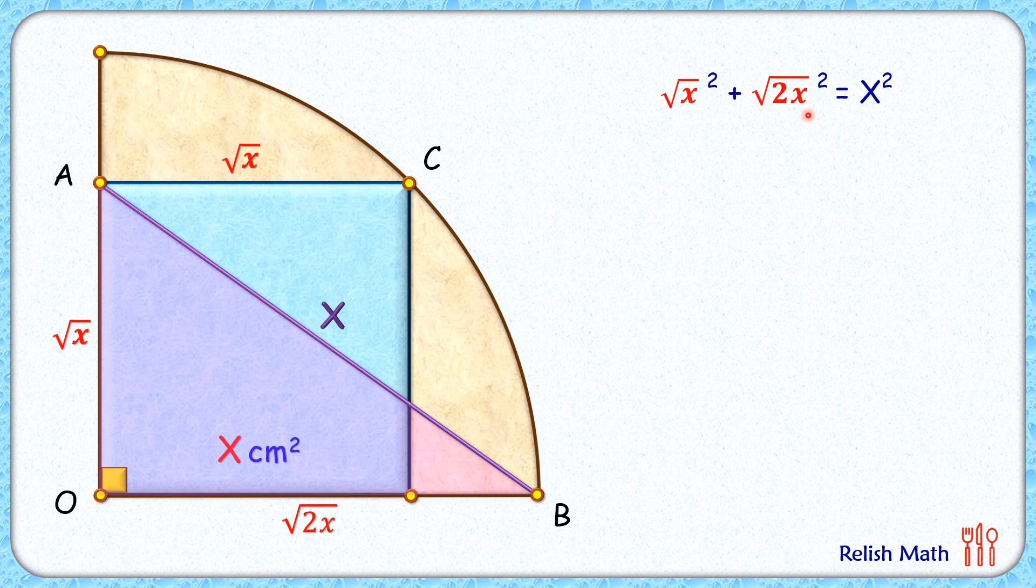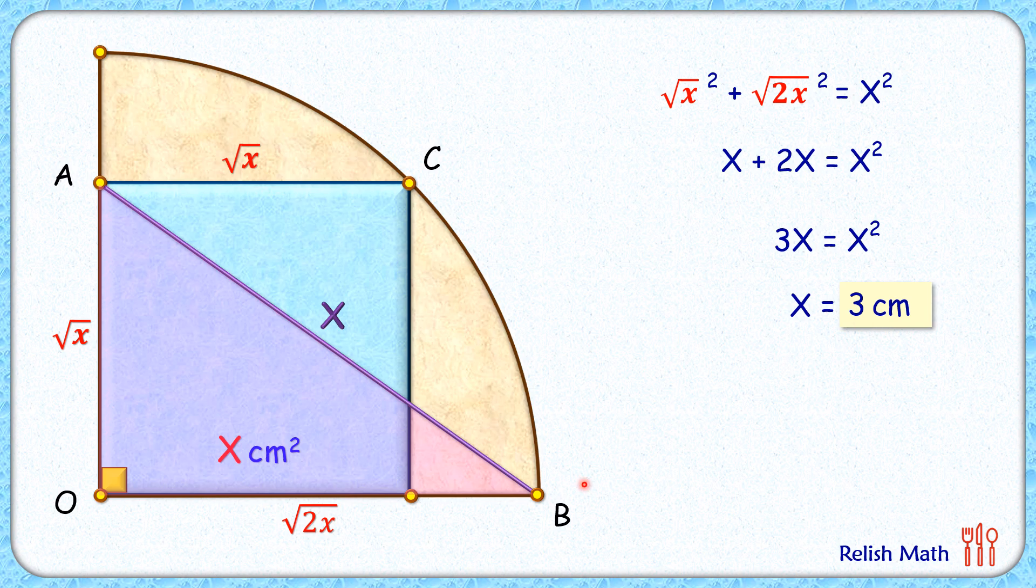So x plus 2x equals x square. We get 3x equals x square. X will get cancelled so we'll get x as 3 centimeter. As x is 3 centimeter, the radius is root 2x.